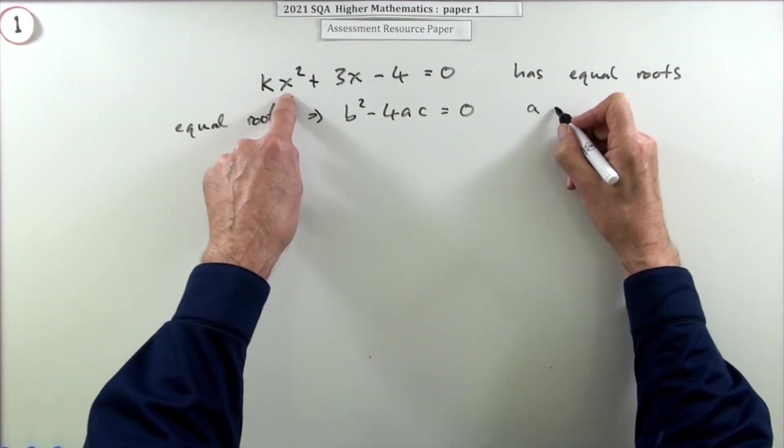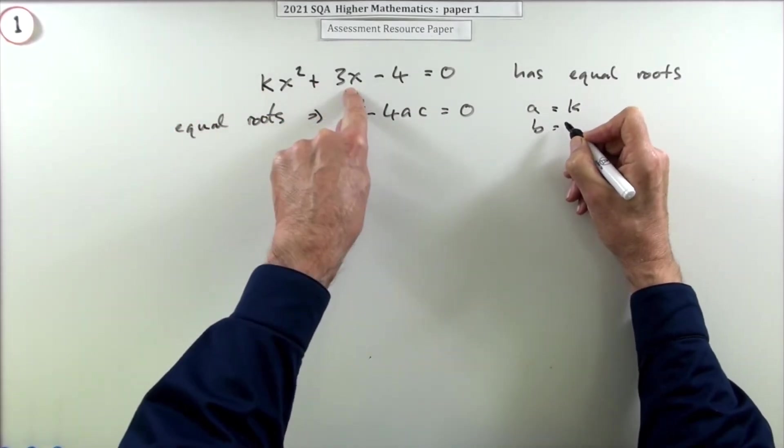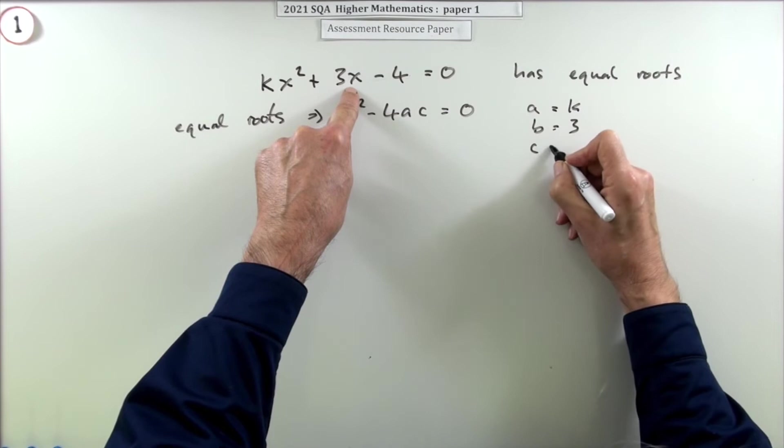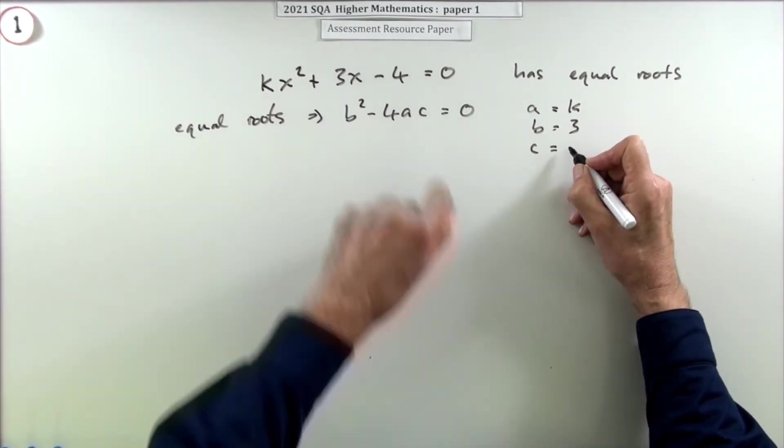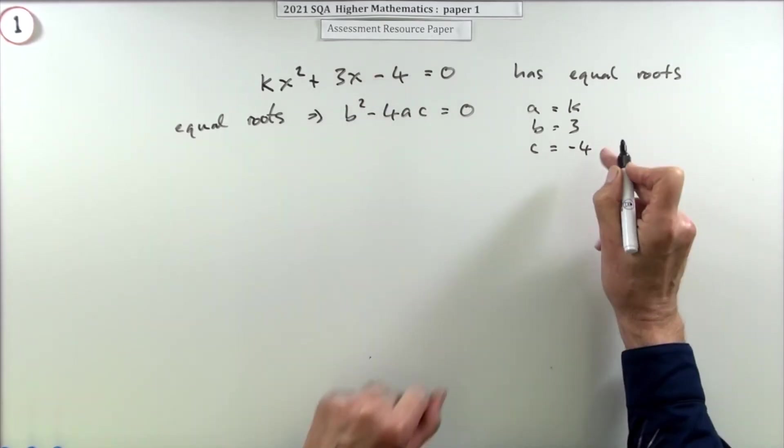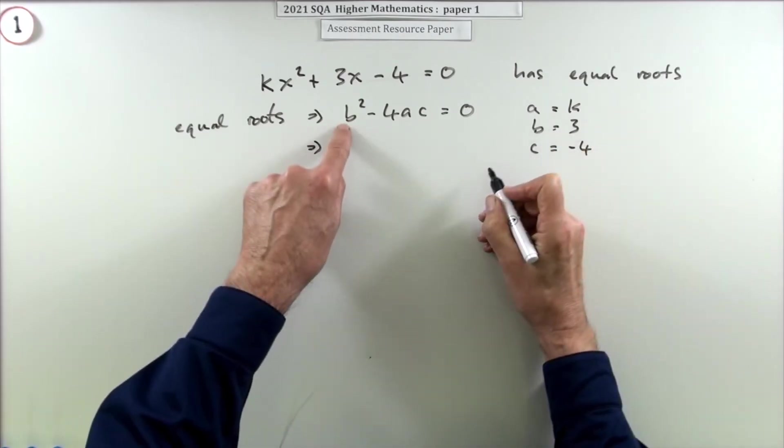Now that essentially would be two of the three marks once you've put the figures in. I'll just spell out what they are. a is the coefficient of the x² term, which is k. b is the next term, the coefficient of the x term, which is 3. And c is the constant on its own, the constant term, which is -4.